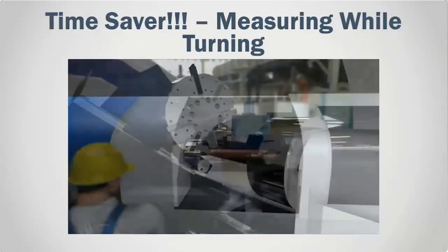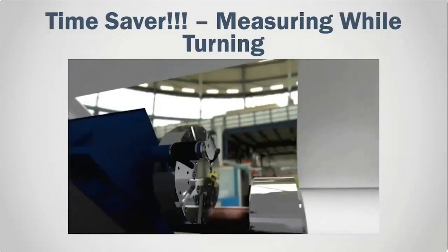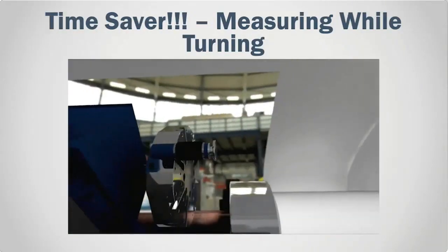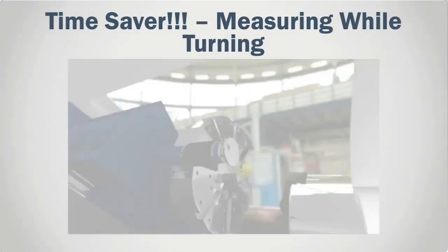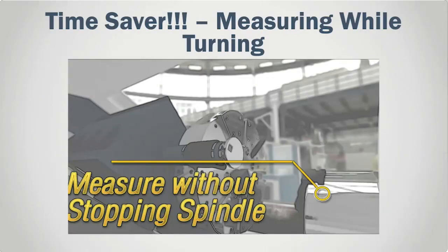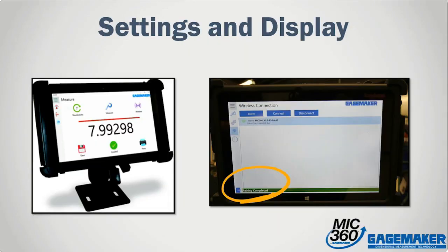Stopping the spindle to take a measurement is time-consuming, which again adds to the cost of inspection — not a factor with the MIC360. In fact, the spindle must be turning while measuring; this is part of the unique gauging solution. Using the display to get set up couldn't be any easier. Simply pair with the Bluetooth and get ready to take measurements.